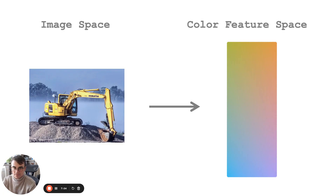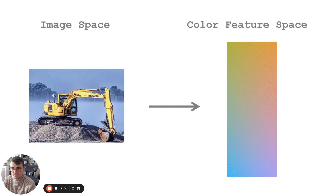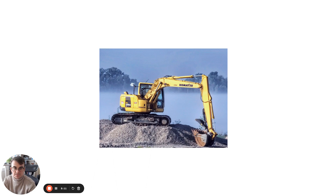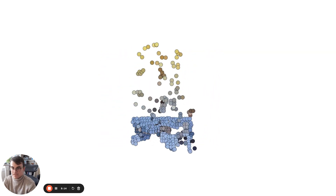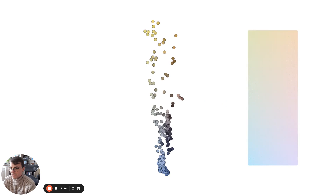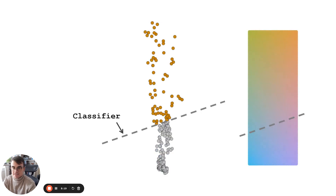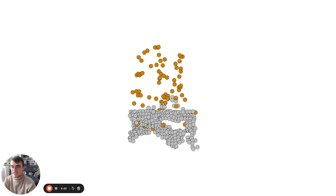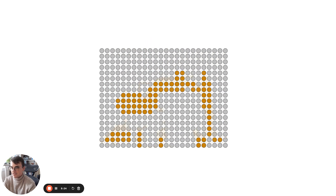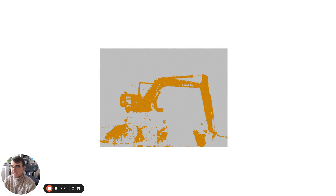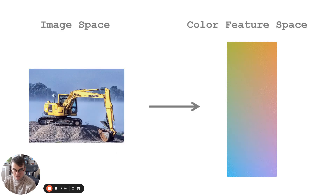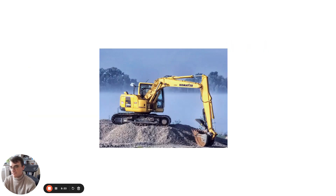Of course, machine learning operates in many different domains. If, for example, we're creating a system for monitoring the use of construction equipment on a project, we would go through very similar steps. We transform things in the real world into a feature space, we draw boundaries within the feature space that allow us to produce desired outputs — in this case, identifying the position of an excavator in images or video by asking: is this object similar in color to other excavators we have seen?